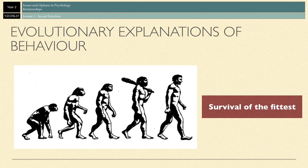The approach argues that if a behavioural feature — for example, aggression — has been genetically inherited from one generation to another, then it must have some specific value for that species. It might either help humans adapt to the environment and survive, which is called natural selection, or it might help to attract a mate and produce healthy offspring, which is called sexual selection.